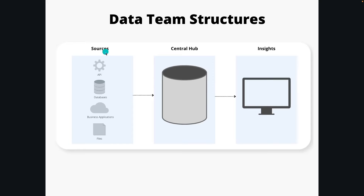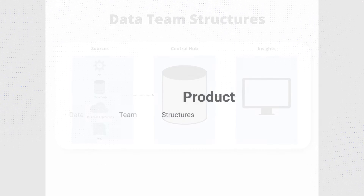This is what I call the three pillars of data engineering, from another video you're welcome to check out. I like to use this visual to help explain where certain people might be operating in the grand high-level scheme of a data platform. You have your sources and source systems, a central hub — let's call this a data warehouse or a data lake — with data transformation happening in the middle, and then insights, which would be data visualization, machine learning, stuff like that.